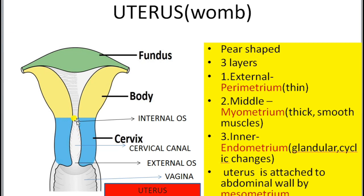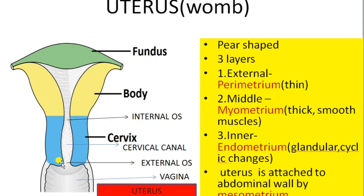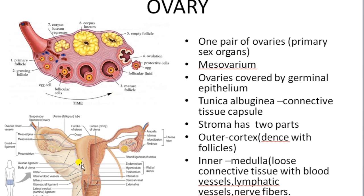The cervix region consists of two openings: the internal os and the external os. The region between these two orifices is known as the cervical canal. The cervical canal along with the vagina forms the birth canal, through which the baby moves and comes out. The uterus is attached to the abdominal wall by a peritoneal membrane known as mesometrium.